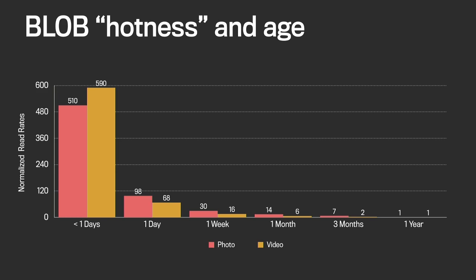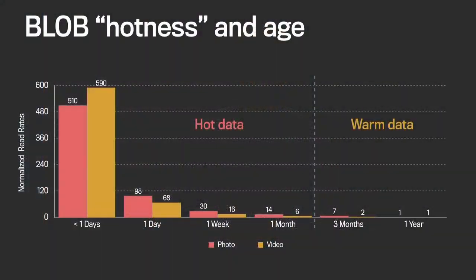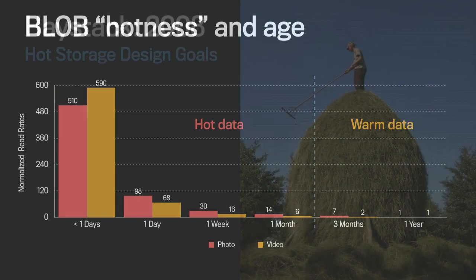This means that Facebook's blob storage problem can really be broken down into two problems. We have a lot of hot data that gets a lot of read requests, and then we have a lot of warm data that grows over time but does not get as many requests. Previously we've talked about the solution we have for hot data, and we'll see how it motivates the solution for a new warm storage system, which is F4.